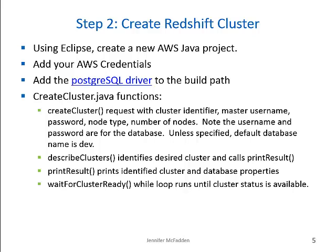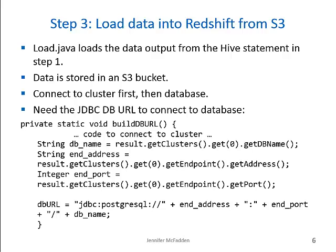DescribeClusters identifies the desired cluster and calls printResult, which prints the identified cluster and database properties. After createCluster is called, waitForClusterReady is called, which gives feedback when the cluster is available. Note this will take around 10 to 20 minutes. In step 3, we will load the data into Redshift using load.java. This will use the data output from the Hive export in step 1, which is being stored in an S3 bucket. Load.java connects to the cluster first, obtains the JDBC URL, and then the database. The buildJdbcURL function builds the JDBC URL you need to connect to the database from the database properties available to you. Alternatively, you can copy and paste this from the cluster console.